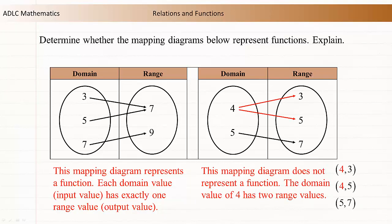The second mapping diagram does not represent a function. The domain value of 4 has two range values. This relation has two output values for the same input value, so it is not a function.